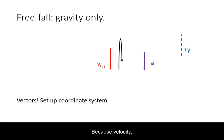Because velocity and acceleration are vectors, you must draw a diagram and set up a coordinate system. For free fall problems, it is traditional to designate positive y upward.